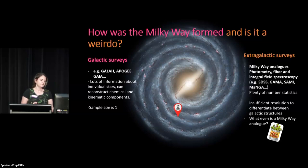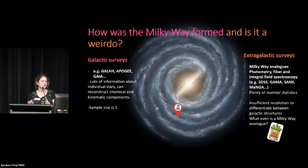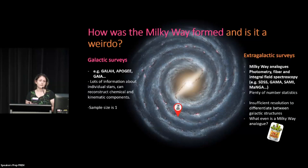There are plenty of number statistics there, but even with the most recent generation of IFS surveys we really don't have the resolution to be able to differentiate between especially faint galactic structures. I'm talking thick and thin disks, these sorts of things.